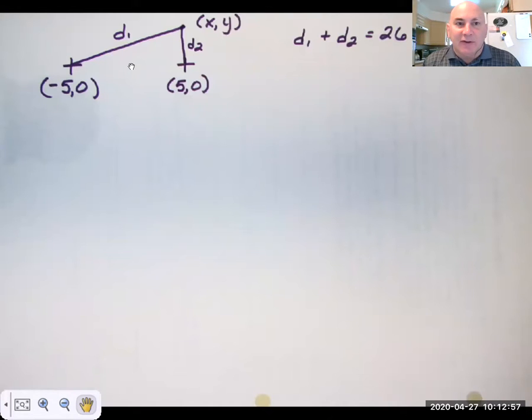Well, we know that c, because here the center is at 0, 0, so c is 5, so a squared minus b squared equals c squared, a squared minus c squared equals b squared, 13 squared minus 5 squared is 12 squared. So the answer is x squared over 169 plus y squared over 144 is equal to 1.